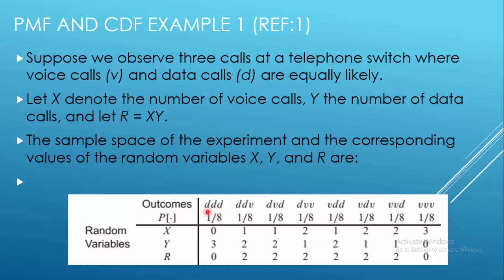The sample space here is just like three tosses of coins — we have either all data calls, all voice calls, or some cases two data and one voice, and two voice and one data. These are the possible combinations, and the probability is 1/8 for all outcomes because voice and data calls are equally likely.